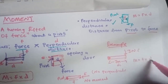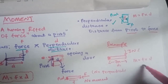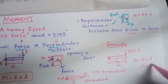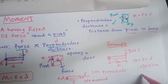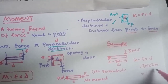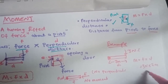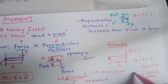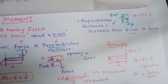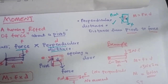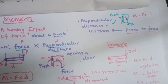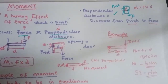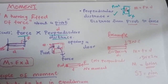Moment equals force times distance. The force is 3 newtons times the distance, which is 2 meters. So we get 6 newton meters. These are the SI units for a moment — newton meters.